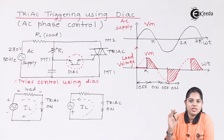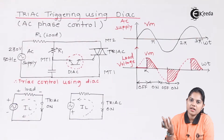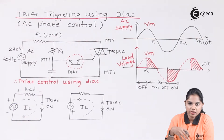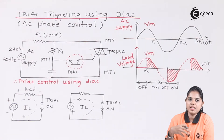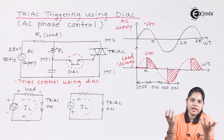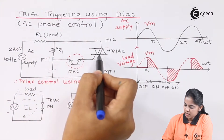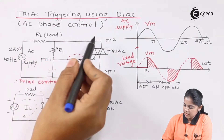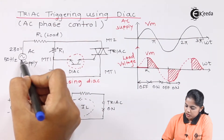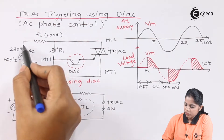The topic for today is TRIAC triggering using DIAC. We have already studied the working principle of a TRIAC and a DIAC. Now we will see what we can achieve by using TRIAC and DIAC in conjunction with each other. Here we have a simple circuit which is drawn using a TRIAC and DIAC. The input supply is a 230-volt AC supply at 50 Hz frequency, connected to a resistive load RL.